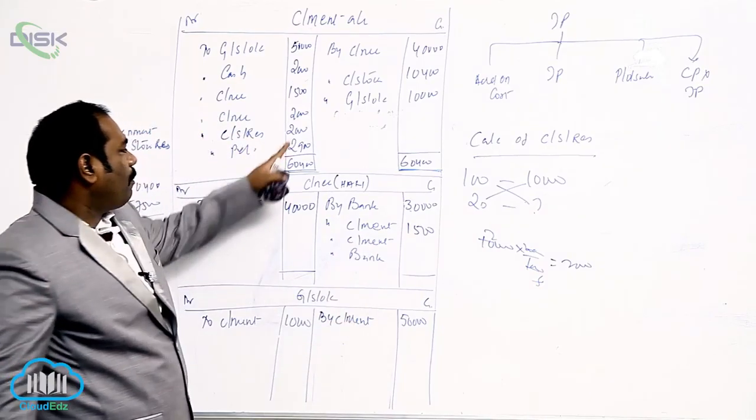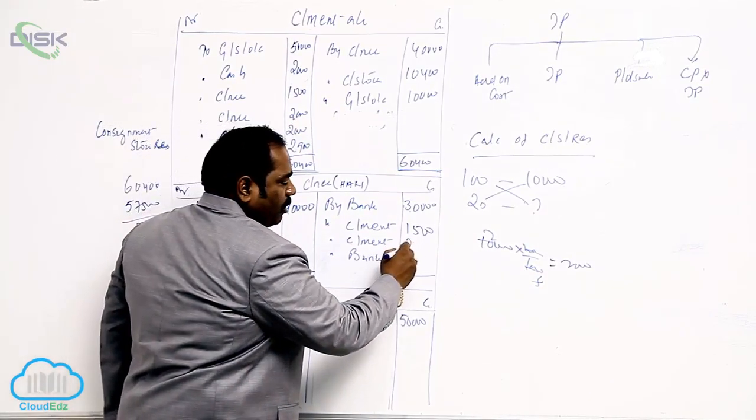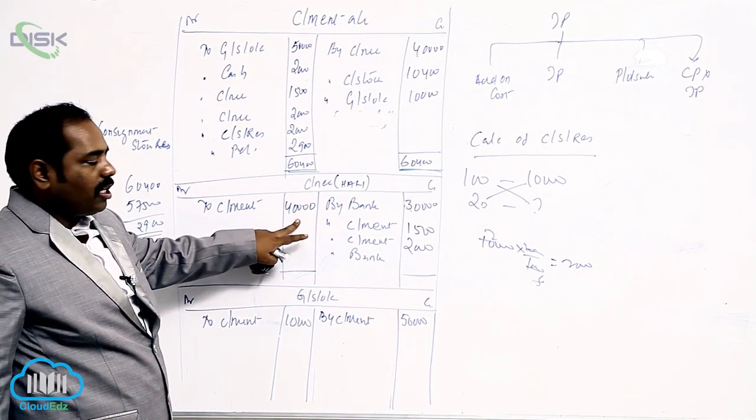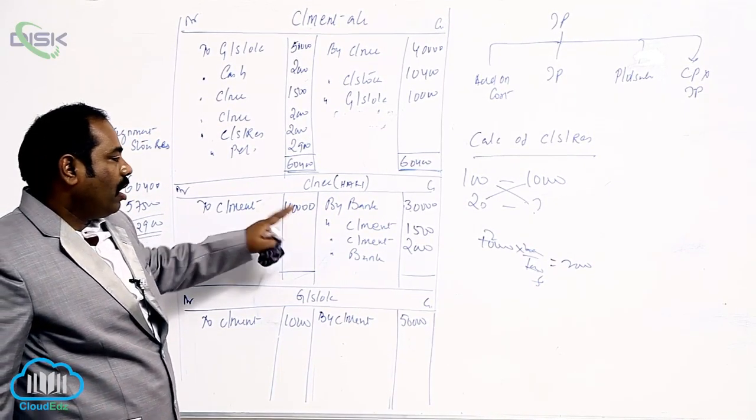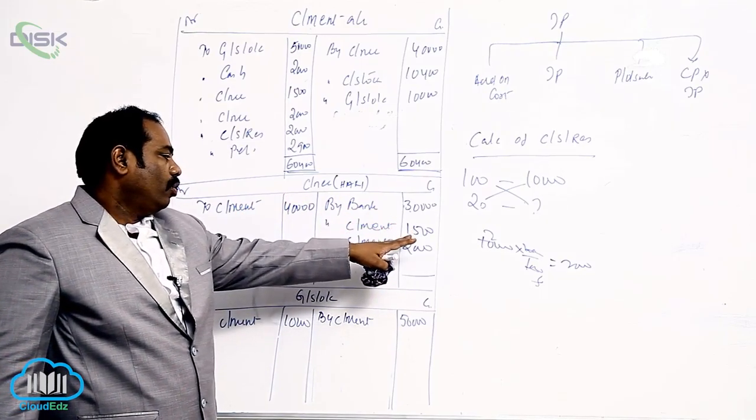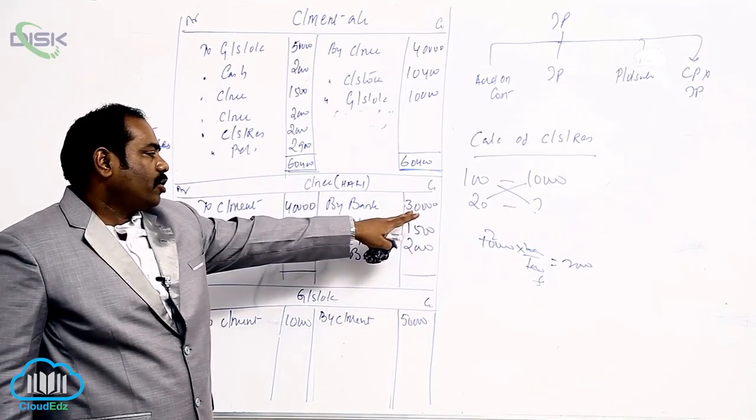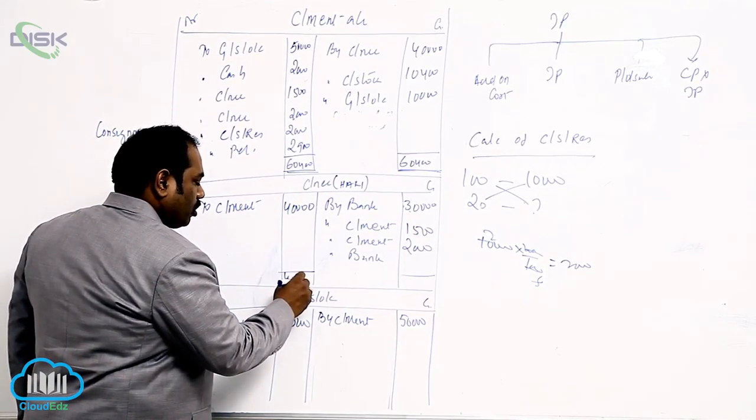By consignment is for what? Commission. What he has directly given you the commission is what? 2,000. Now settlement we have to find out. Consignee has to give to the consigner. How much he has to pay? 40,000. And what should the consigner has to give? 1,500 towards expenses and 2,000 towards commission. And he has to adjust the advance also.